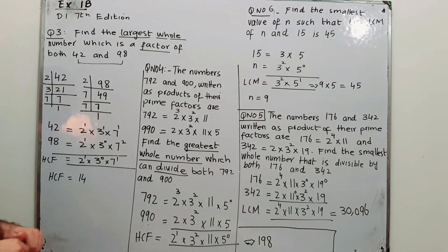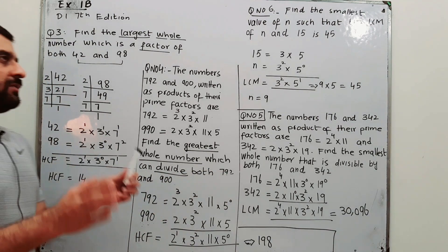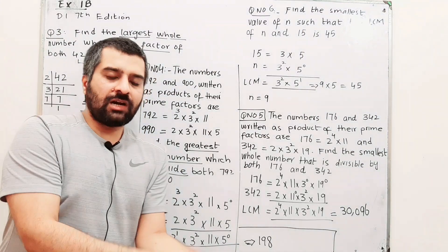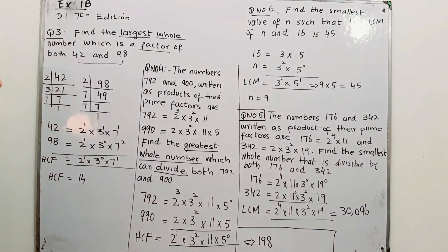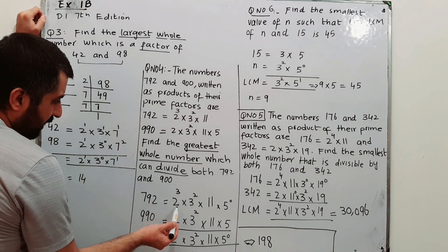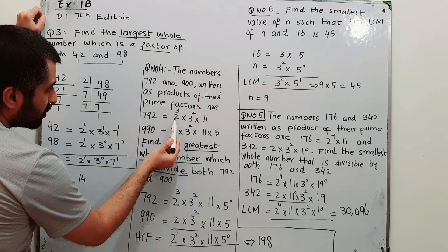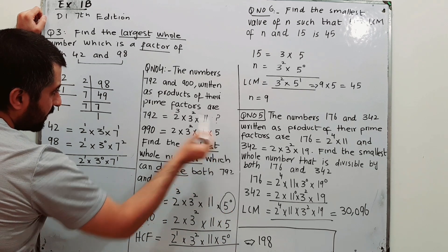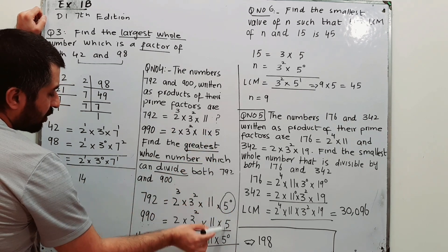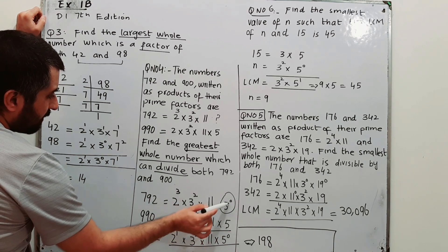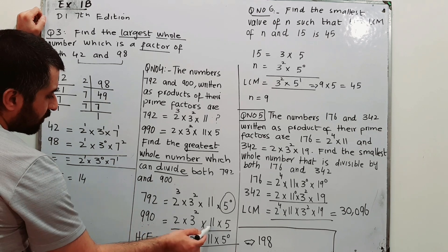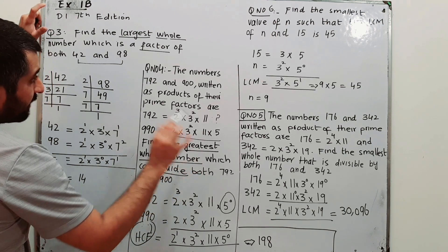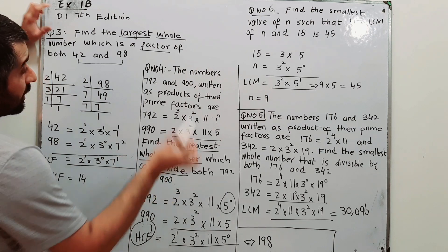When we are talking about dividing, the concept is factors — factors are those which divide the numbers. So we are finding HCF. 792 = 2³ × 3² × 11 × 5⁰, and 990 = 2 × 3² × 11 × 5. If a number is missing from a column, enter that number with power 0.